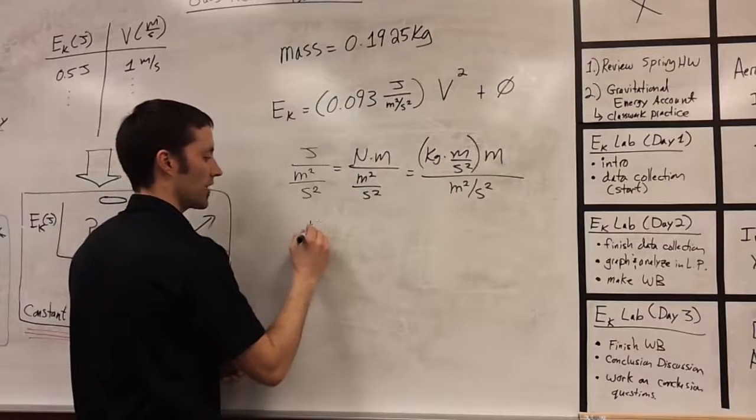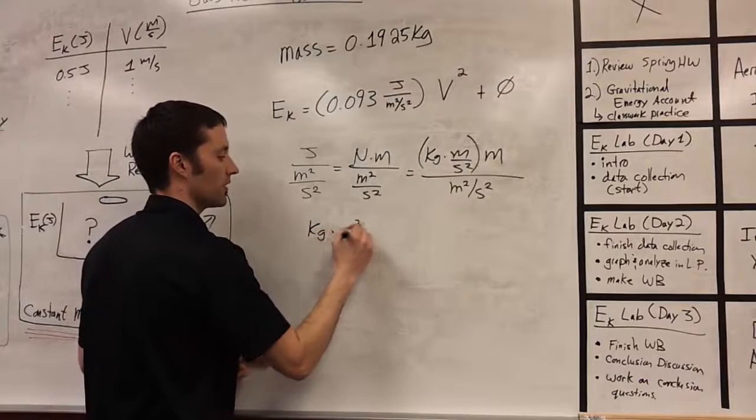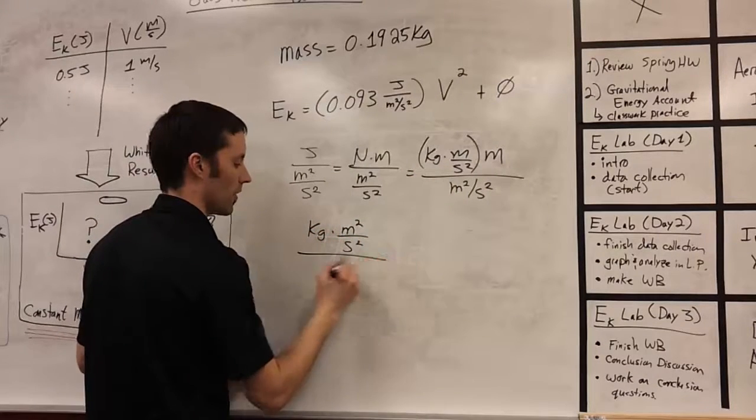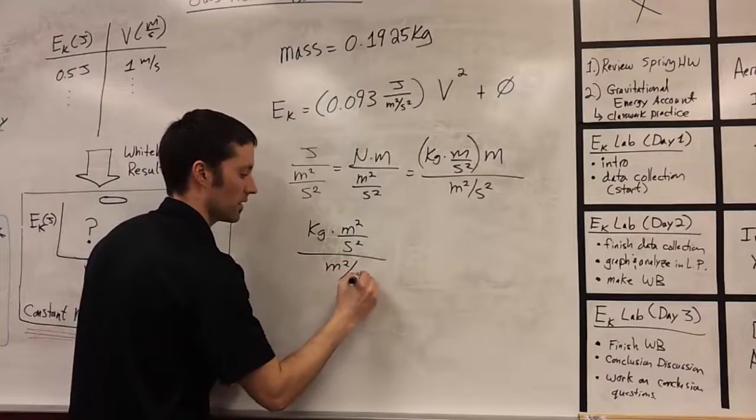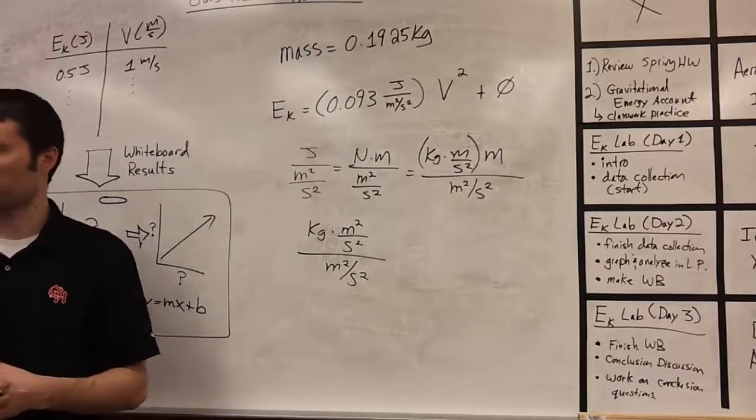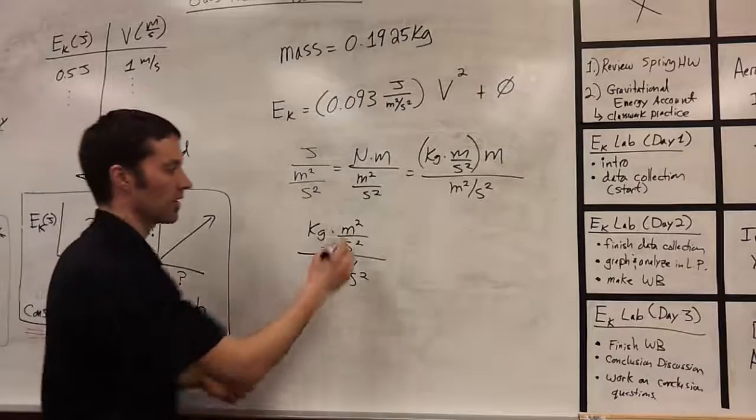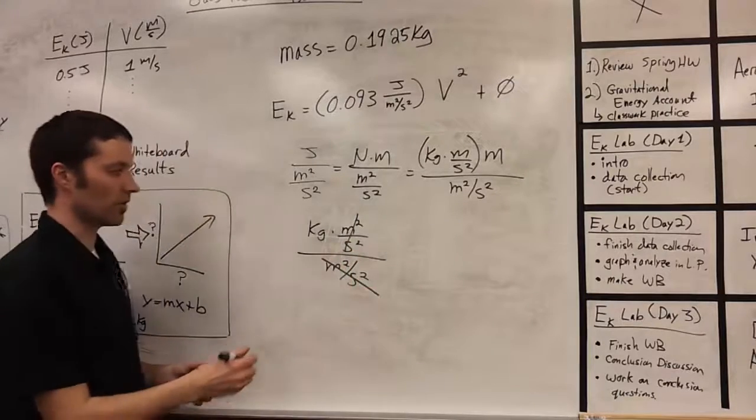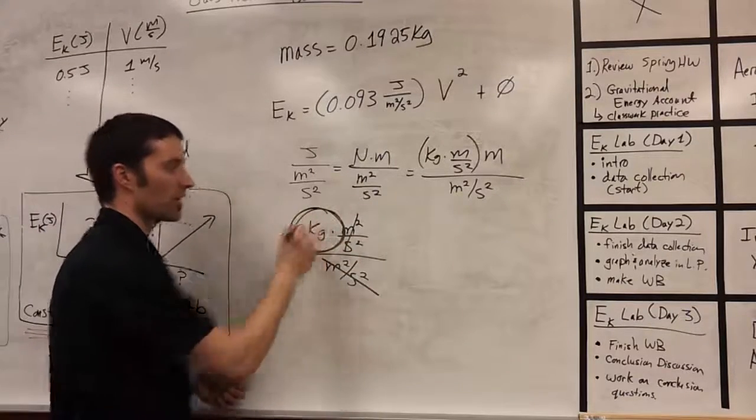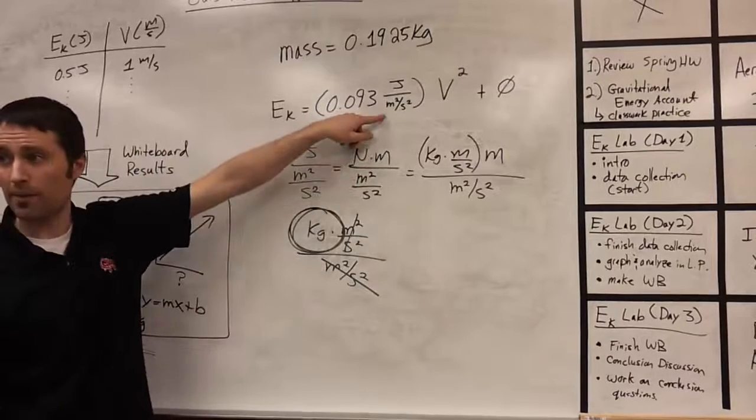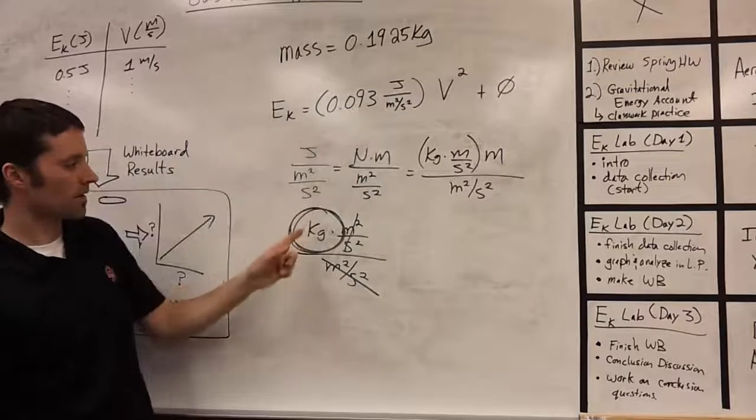If I combine these two things together, we get a kilogram times a meter squared over seconds squared, all divided by meters squared over seconds squared. A lot of crazy units, but check this out. These all cancel, and the only unit left over is kilograms. So this crazy combination of units are just kilograms.